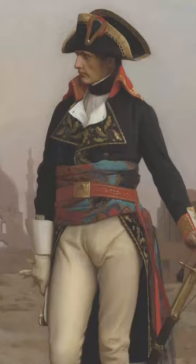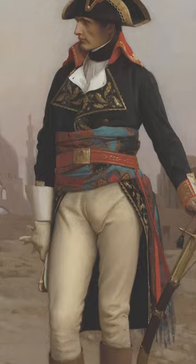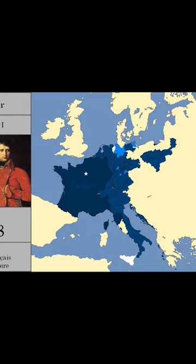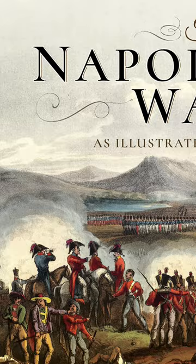Napoleon was born in Corsica in 1769 and rose to power during the French Revolution. He became the emperor of France in 1804 and embarked on a campaign of conquest across the continent.